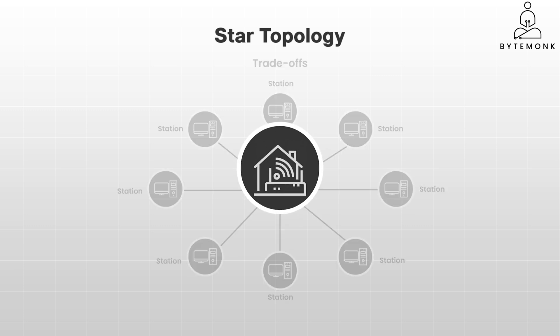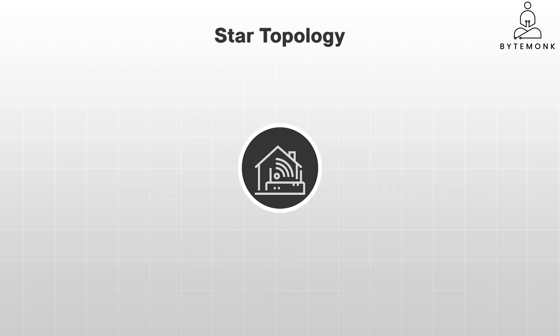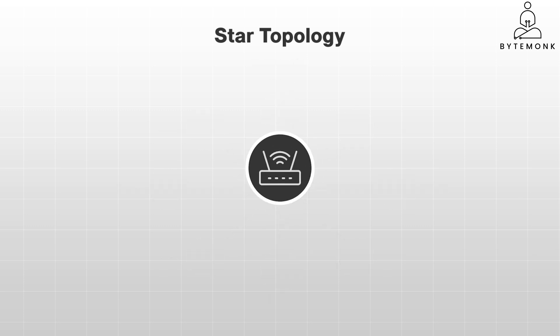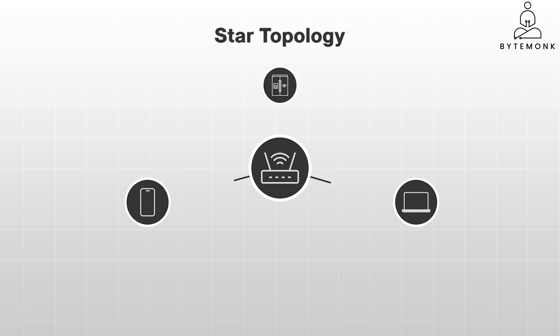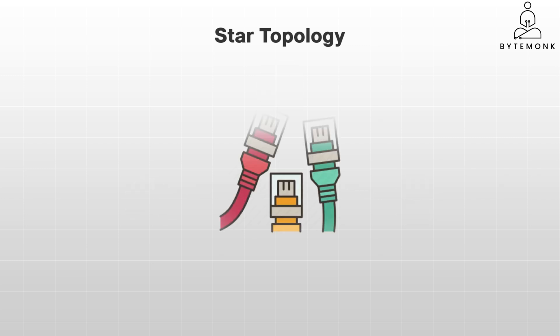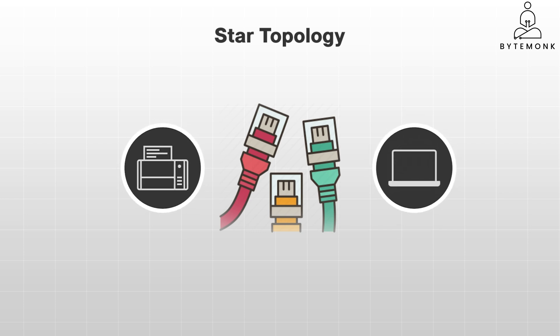Despite these limitations, star topology's advantages make it the most popular choice for a wide variety of applications. Your home Wi-Fi network is a classic example — your router sits in the middle, connecting all your devices from your laptop to your smart refrigerator. Star topology is also the go-to for most office networks, with Ethernet cables fanning out from a central switch, connecting desktops, printers, and all sorts of gadgets. Star topology strikes a balance between simplicity, performance, and reliability.